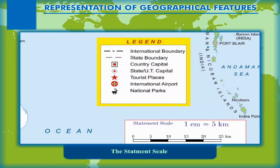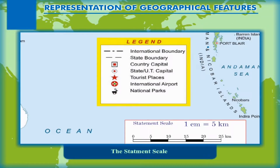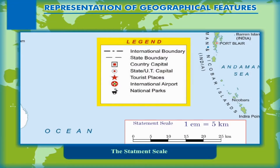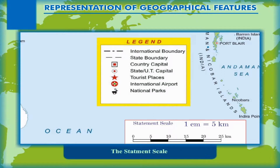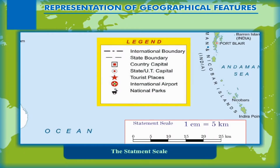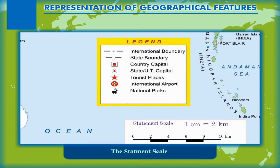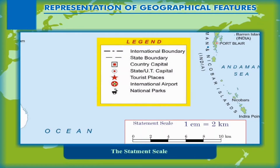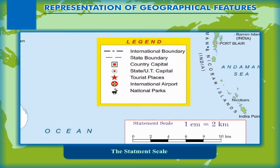The statement scale is the easiest to read. It needs no calculation to read and understand what it indicates. It uses simple words to represent the ratio of the distance on the map to the corresponding distance on the ground.